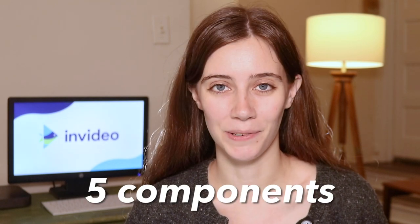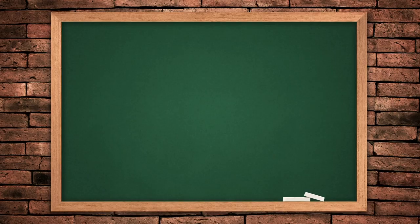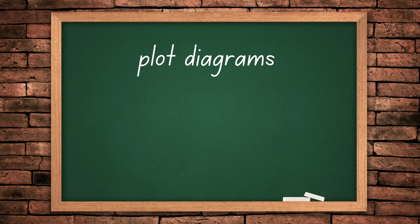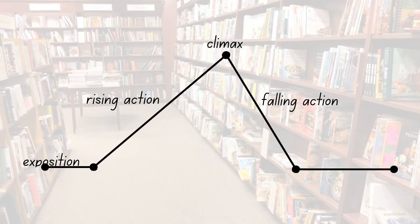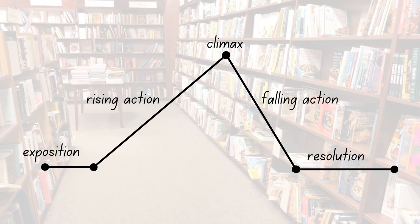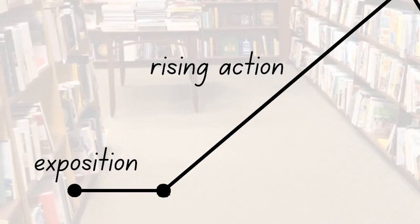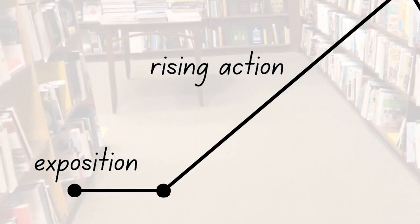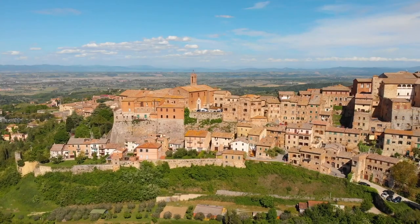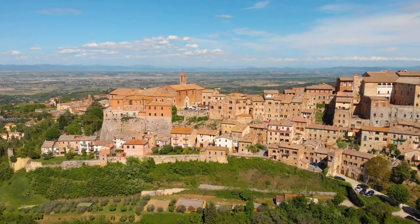Let's start with the very building blocks. Every great story is traditionally made up of five components. You might remember looking at plot diagrams in school — these can actually come super in handy when you're creating videos. Let's go ahead and go over the components of a story. The first part of your story is the exposition, where you establish the setting of the whole story. In a movie, this is where you get introduced to the town where the movie is going to take place and the main characters.